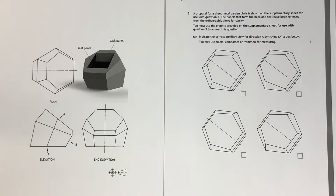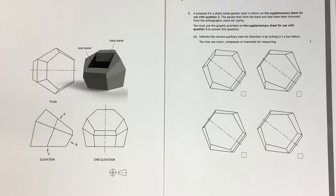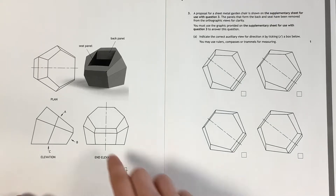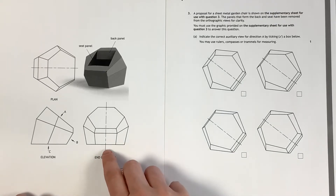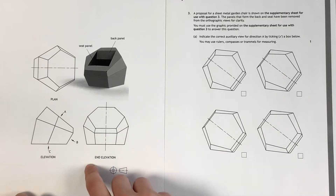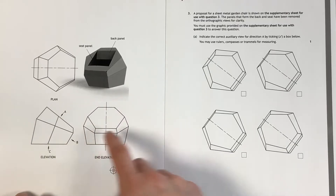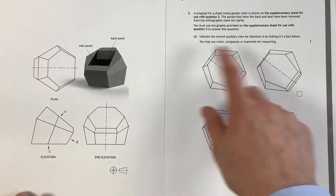In this video we're going to look at how we answer auxiliary view questions in an exam. Auxiliary view questions in the higher question paper are approached in a very similar way to true shape questions in the National 5 paper. You start by looking at your orthographic views — your elevation and plan — to find key dimensions that will help you with your auxiliary view.